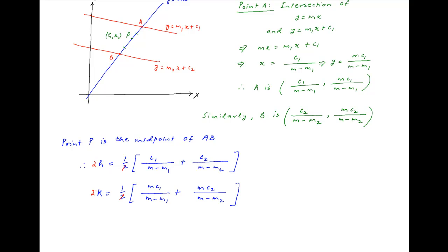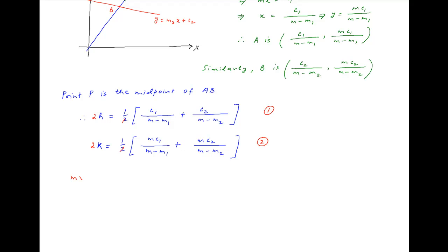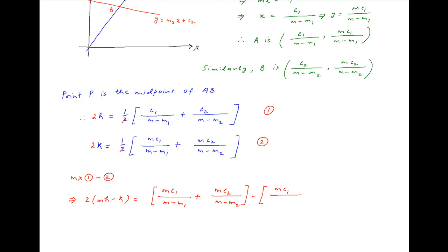Multiply both equations by 2 and label them equation 1 and equation 2. Now multiply equation 1 by m and subtract equation 2. We get 2 times (mH minus K) equals mc1 upon (m minus m1) plus mc2 upon (m minus m2). Notice that all the terms on the right-hand side cancel out, so the right-hand side equals 0, which implies mH minus K equals 0, and therefore m equals K upon H.